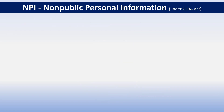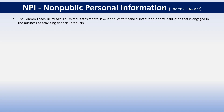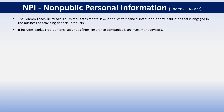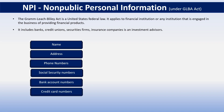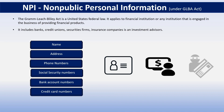We have another category of information which is non-public personal information, defined under the GLBA Act. The Gramm-Leach-Bliley Act is a United States federal law that applies to financial institutions engaged in providing financial products, including banks, credit unions, securities firms, insurance companies, and investment advisors. Non-public personal information includes data such as name, address, phone numbers, social security numbers, bank account numbers, and credit card numbers. It is considered sensitive because it can be used to identify individuals, track their financial transactions, or commit fraud or identity theft.